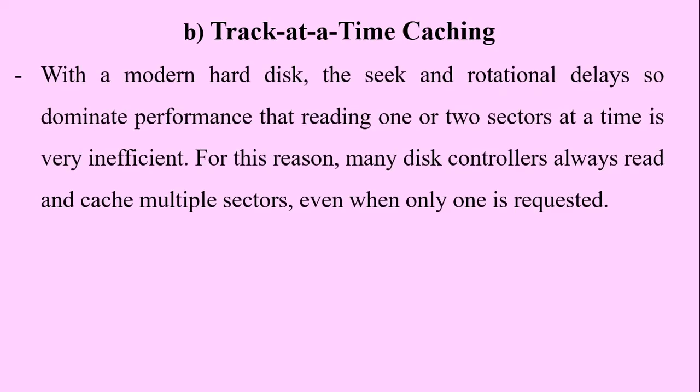Let's now look at what we call track-at-a-time caching. With a modern hard disk, seek and rotational delays so dominate performance that reading one or two sectors at a time is very inefficient. For this reason, many disk controllers always read and cache multiple sectors, even when only one is requested.